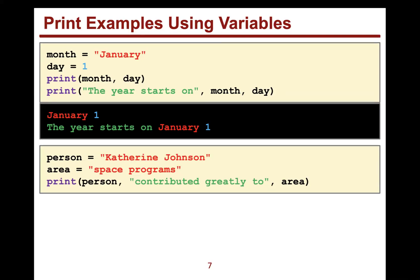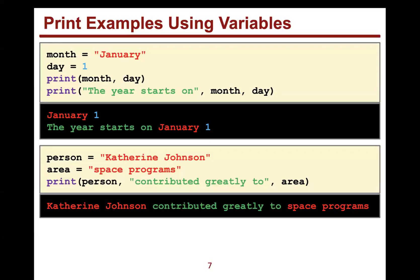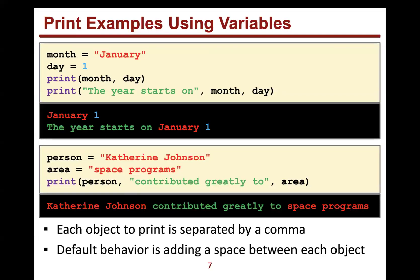Here's another example: person equals Katherine Johnson, area equals space programs, and we call print with person comma a string comma and another variable. We see a space between the value of person and the string contributed greatly to, and the value of area. Each object that print is going to print is separated, so when we call print with multiple arguments separated by commas, the default behavior adds a space between each object.